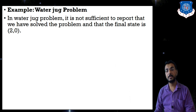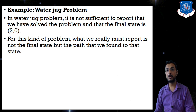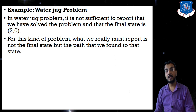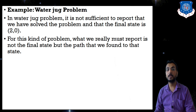Starting from (0, 0), we first fill the 4-gallon jug, then the 3-gallon jug, proceeding step by step until we ultimately reach the final state (2, 0). For this kind of problem, what we must report is not just the final state but the path we found to that state. In the water jug problem we will not reach the goal state directly — there will be many intermediate states forming an entire path to the final goal state. We report the entire path, not just one final state.